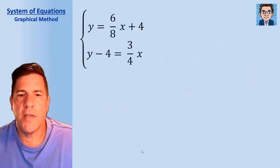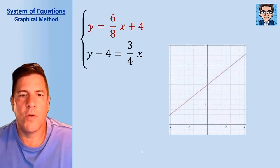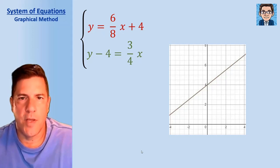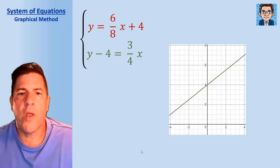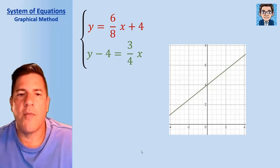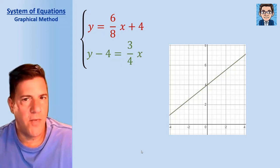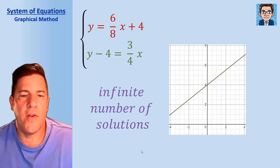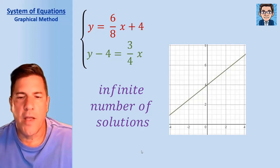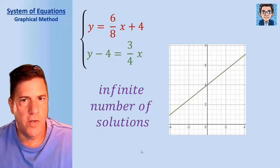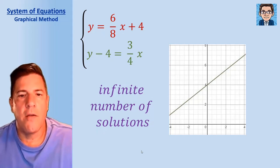Let's look at one more case. Graphing the first equation in red, when we go to graph the second in green, it lays right on top of the other one. If you rearrange these two equations, you can see they are actually the same equation — they lie right on top of each other. Every single point on one line is also on the other. In this situation, there is an infinite number of solutions.